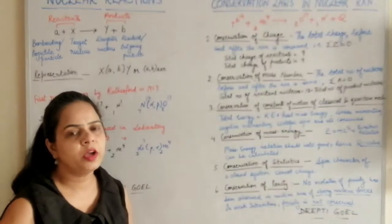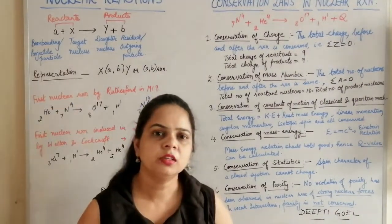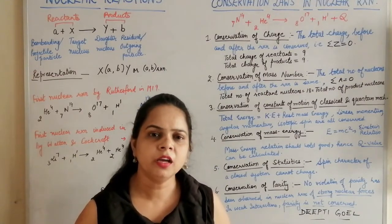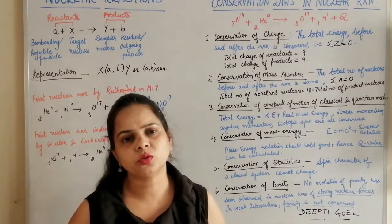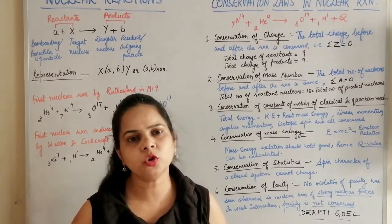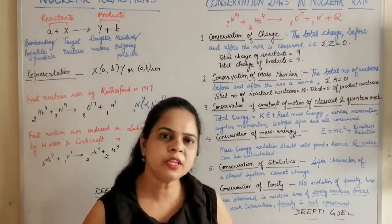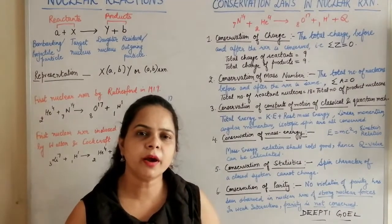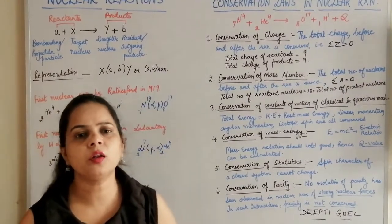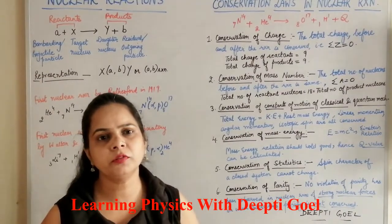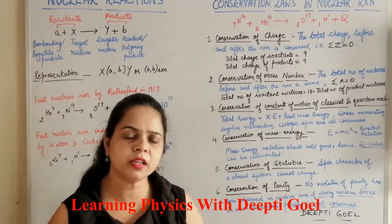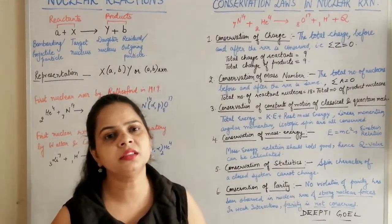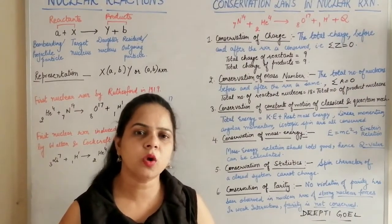The last conservation is parity. If the reactant side has left-handed parity or positive even parity, the product side must also have the same. In nuclear reactions involving strong nuclear forces, parity is conserved. However, in the case of weak interactions, the parity law is violated — this will be discussed further when studying elementary particles. To remember: for strong interactions parity is conserved; for weak interactions parity is not conserved.